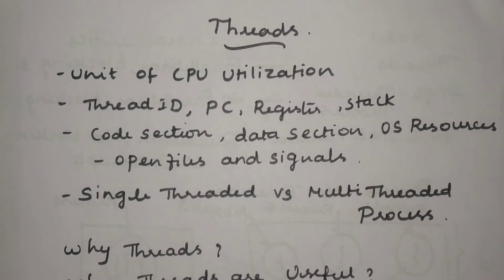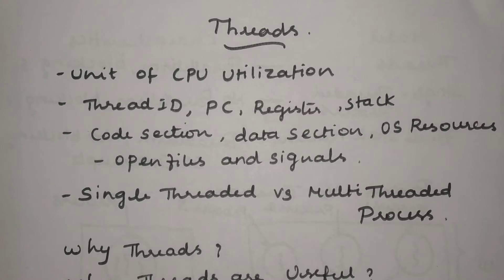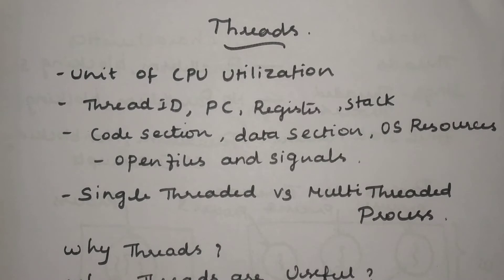First, we should know what a process is. A program in execution is nothing but a process. We can have many processes in the system in order to execute any kind of operation. For example, printing a document is said to be one process.